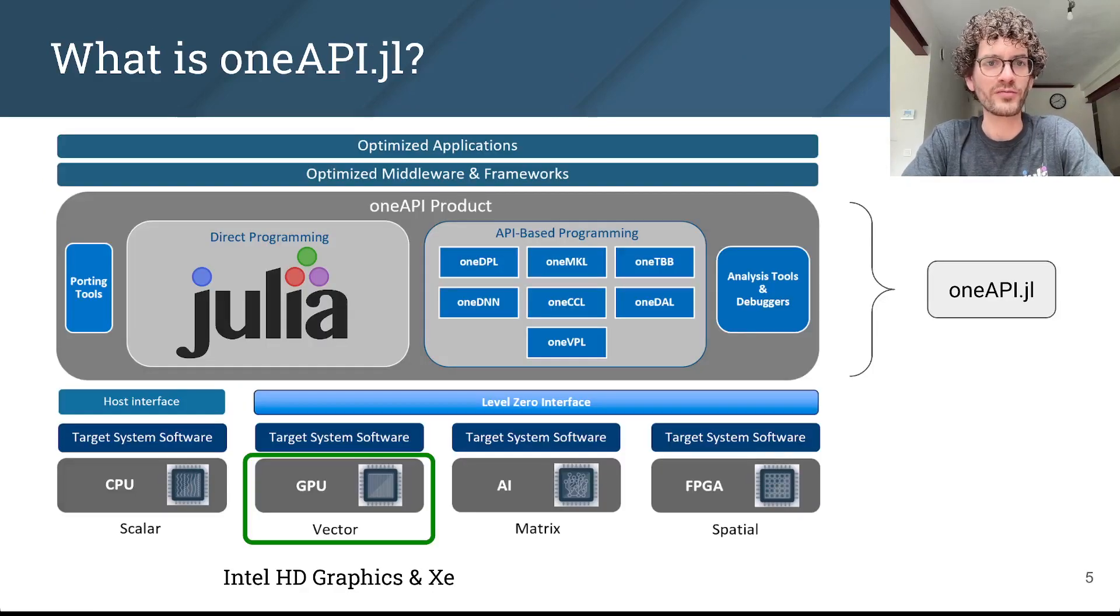And this is of course where oneAPI.jl comes in. It essentially replaces the C++ level of the OneAPI framework with Julia, both for direct kernel programming and for the kind of high-level API-based programming that we're used to in Julia using high-level arrays.